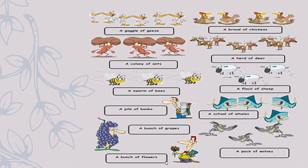A bunch of flowers also. So children, if you see, we can have the same collective noun for different common nouns — just like 'bunch'. It can be a bunch of grapes or a bunch of flowers. 'Bunch' is the collective noun for both grapes and flowers. Now we have a pack of wolves — 'pack' is the collective noun. Are you finding it fun? I am feeling so nice watching so many pictures and learning about collective nouns!